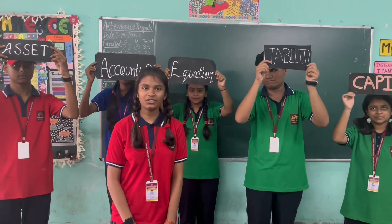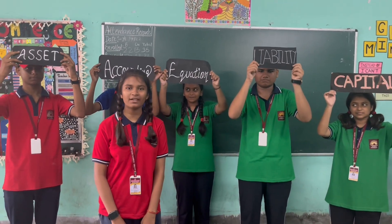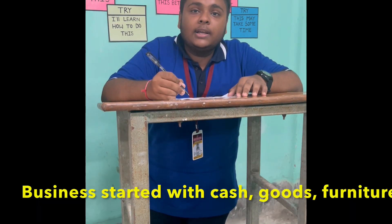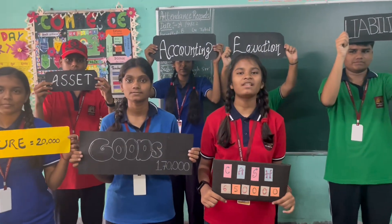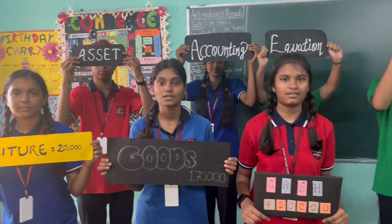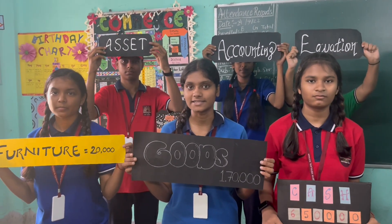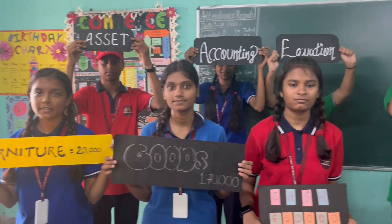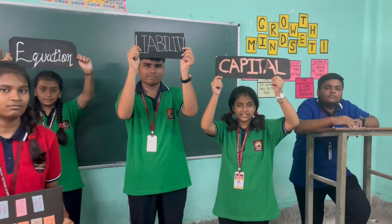Today, I am a Class 11 student's accounting equation. Business started with goods, cash, and furniture. I am cash and I will increase the assets. I am goods and I will increase the assets. I am furniture and I will increase the assets. The capital will also increase.